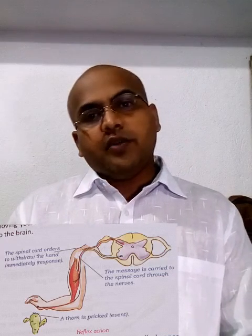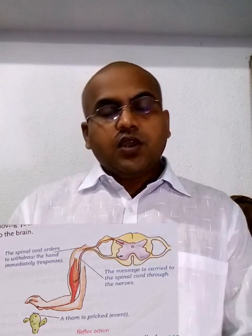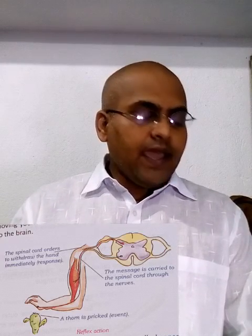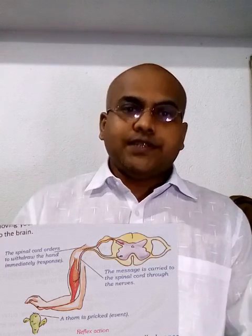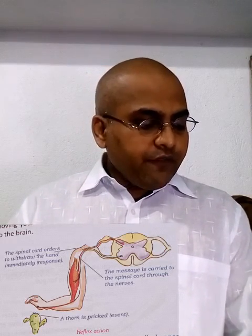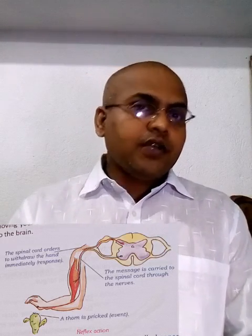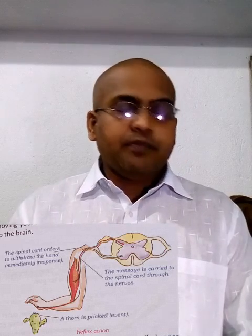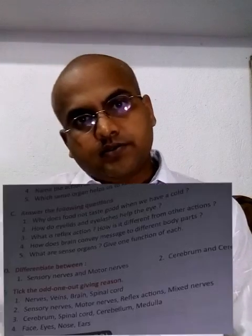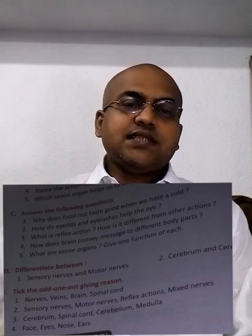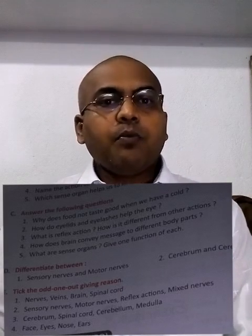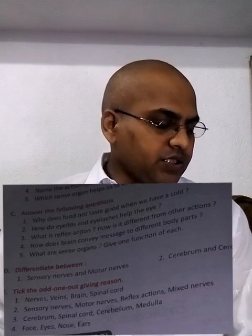The next question: how does the brain convey a message to different body parts? The brain conveys a message by the help of motor nerves and the spinal cord to different body parts, after receiving messages from those body parts via sensory nerves and the spinal cord. This is how messages reach different parts of the body from the brain.